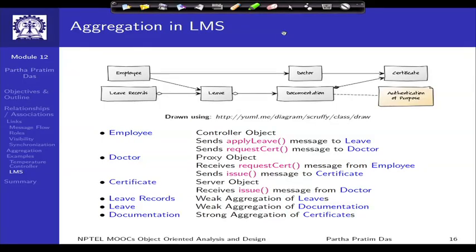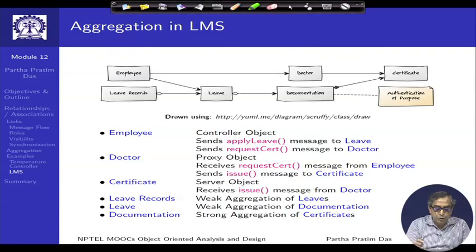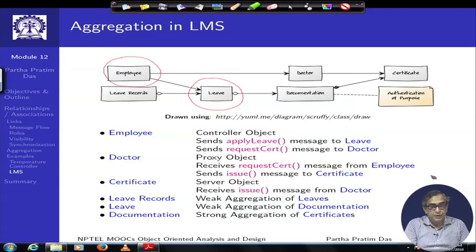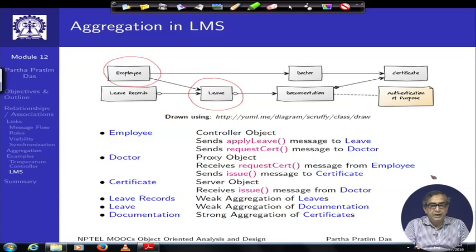We are just taking simple examples to illustrate what different relationships could be in a real system. Let us look back at our Leave Management System. This is a partial model of the leave management system. You are already aware of many of these objects: there is a leave management system with a leave object, and the leave is for employees, so there is an employee object. There are different types of leaves such as sick leave and maternity leave, where we need separate documentation — certificates from doctors, medical reports, and so on — for the leave to be approved or placed in the system.